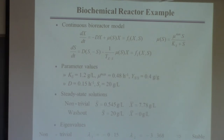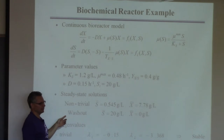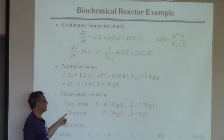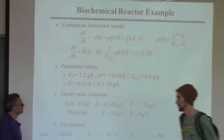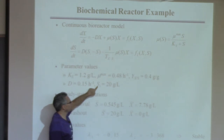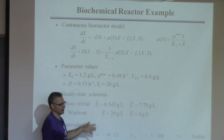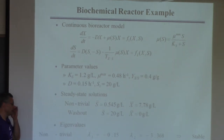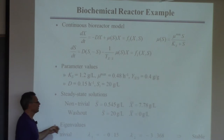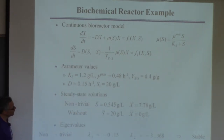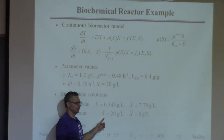We've seen this problem before and analyzed it in detail in ChE 361. We know we can find the steady state analytically by setting the two derivatives equal to zero. There are two steady states: the interesting one where the substrate has dropped to about 0.5 grams per liter and you produce a lot of cells — about 95% of the substrate is consumed — and the washout steady state where no cells are produced.